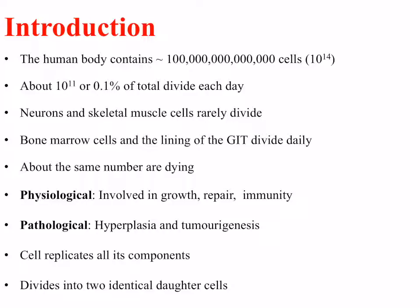The human body contains an estimated 10 to the power of 14 cells, and about 1 by 10 to the power of 11, or 0.1% of this total, divide each day. So that's still an awful lot of cells that are actively dividing every single day of our lives.